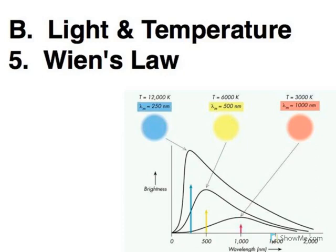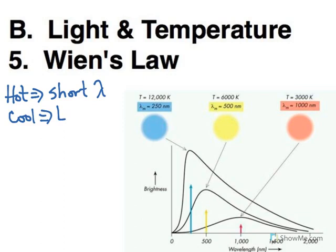Wien's Law. We have seen already the idea that hot objects produce light that has a short wavelength and cool objects produce light with a long wavelength.